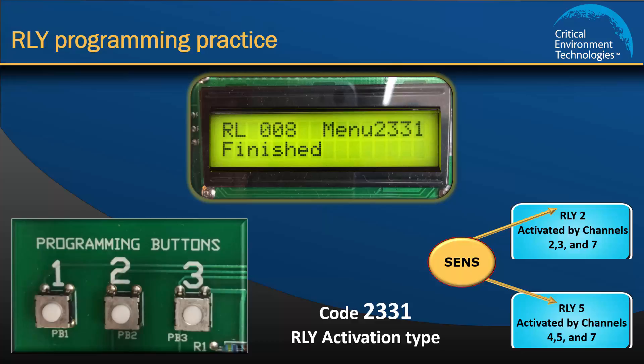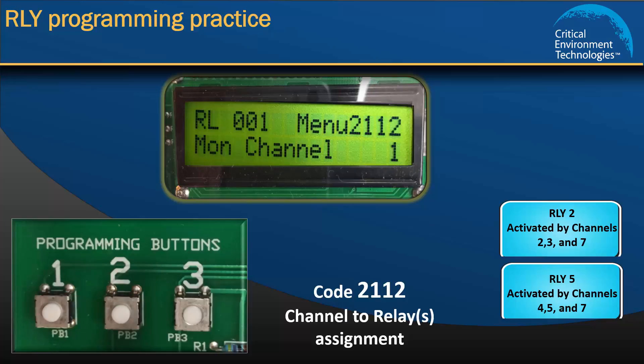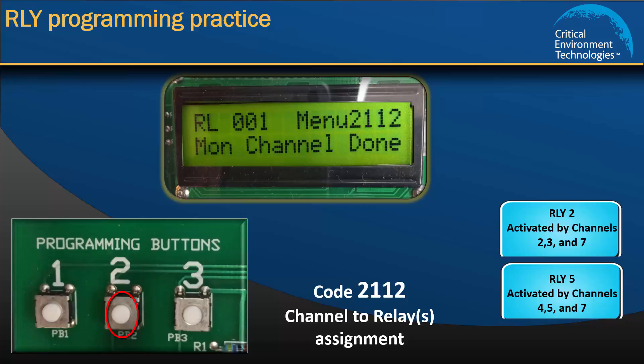Now we need to tell the relays which channels to monitor. For every PDC, the factory default activation type is set to All and the relay-to-channel numbers are set 1 to 1, meaning Channel 1 is assigned to Relay 1, Channel 2 to Relay 2, Channel 3 to Relay 3, and so on. Using the programming buttons, enter code 2-1-1-2 to bring up the Relay to Channel assignment menu. The display will start at Relay 1, Channel 1. We are not concerned with Relay 1, so press 2 to save and the display will show "Mon Channel done."